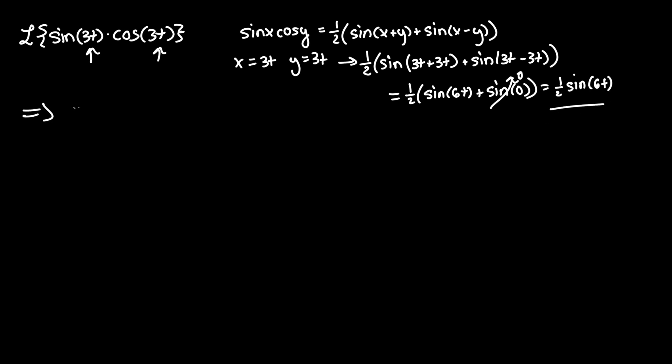Which means that we're actually taking the Laplace transform of one-half sine of 6t. And through linearity we can bring the one-half coefficient out in front, so it would just become one-half Laplace of sine of 6t.